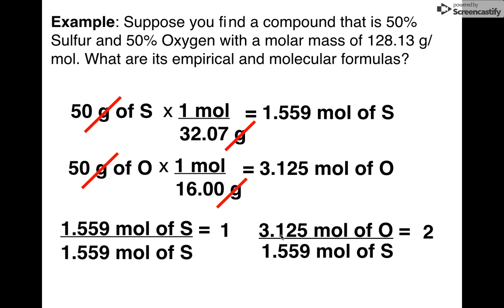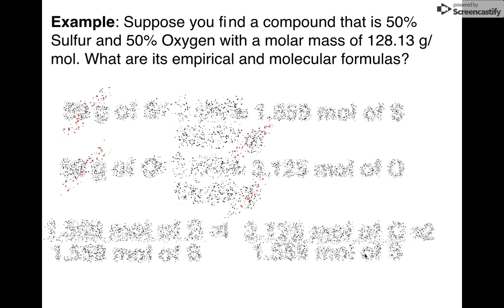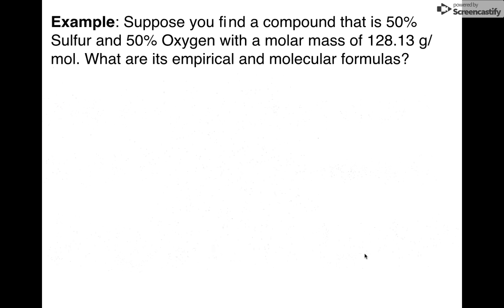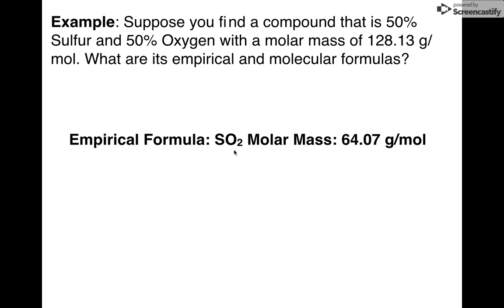Now, you might think, hey, what if I do this backwards? What if I took the bigger one and divide it? You're going to get fractions. You should always get whole numbers. If you get fractions like 0.5 and 0.25, that means you accidentally divided by the wrong one. So I know my empirical formula, though. My empirical formula is SO2. Great.